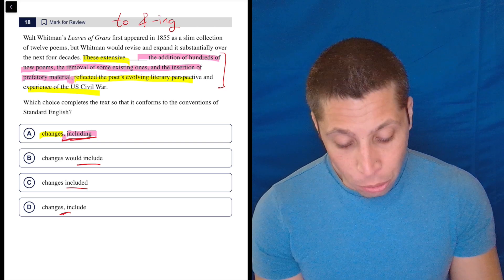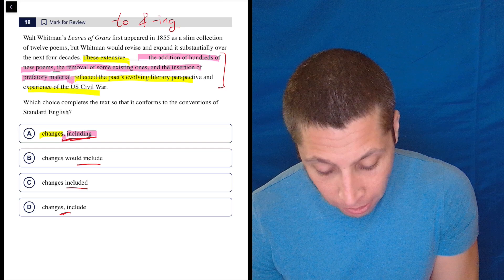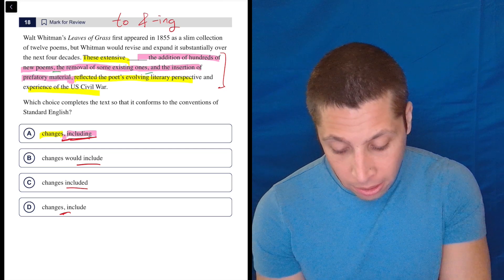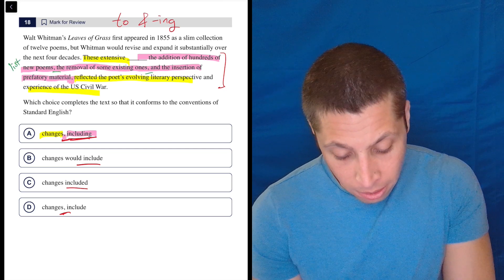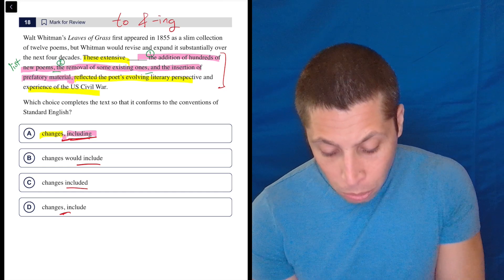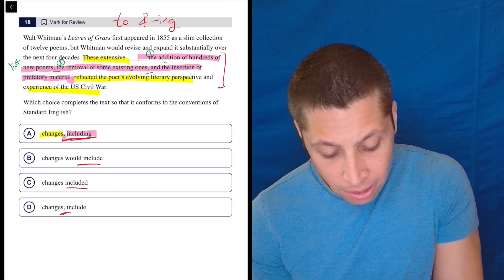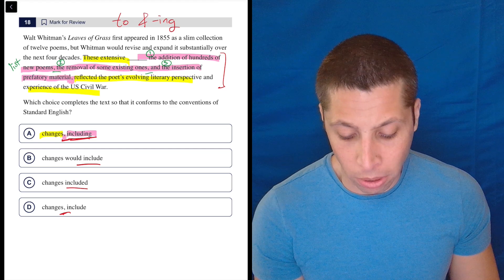So why are there other commas in between? Well, because we have a list, right? So these two commas here and here, those are list commas. We have a list of three things: the addition of hundreds of new poems, the removal of some existing ones, and the insertion of prefatory material.